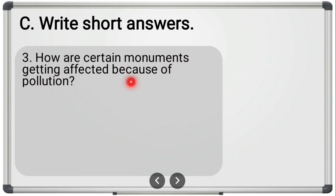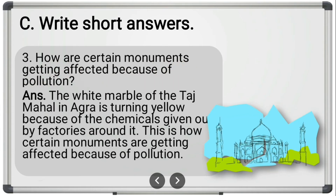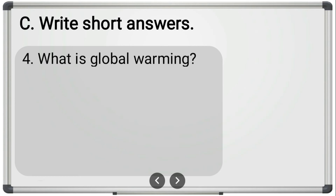Third short answer question: 'How are certain monuments getting affected because of pollution?' Take the example of the Taj Mahal — the white marble of the Taj Mahal in Agra is turning yellow because of the chemicals given out by factories around it. This is how certain monuments are getting affected because of pollution.